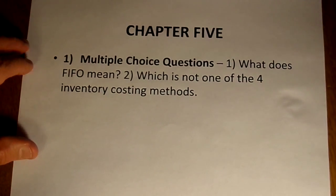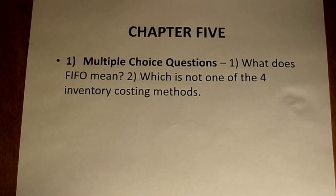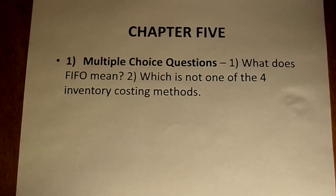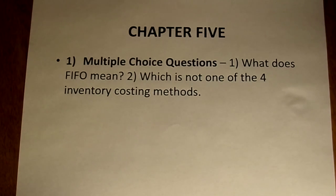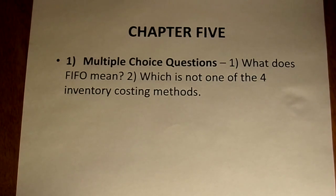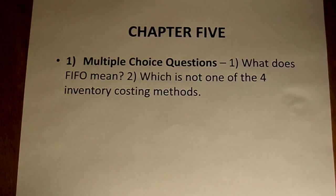Finally, from Chapter 5 there are just two multiple choice questions. One asks: what does FIFO mean? First in, first out — hint. Second: which is not one of the four inventory costing methods? Those are FIFO, LIFO, specific identification, and weighted average — so the one not on that list is not an inventory costing method. If you go back and look at this study guide, all 20 questions are listed out, which means you don't have to guess what the questions on the test are going to be. The 20 laid out are the 20.